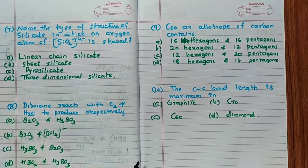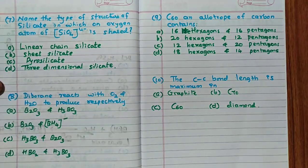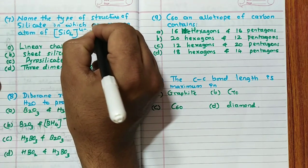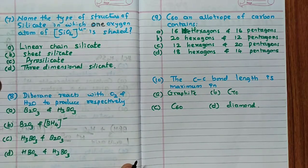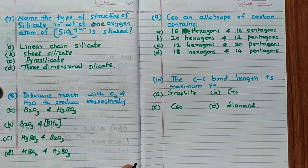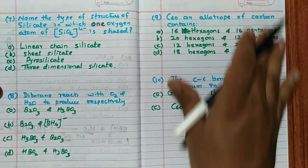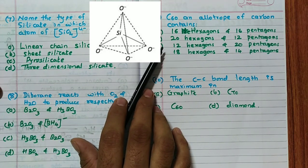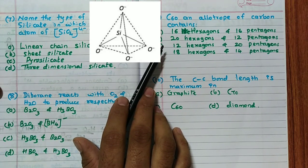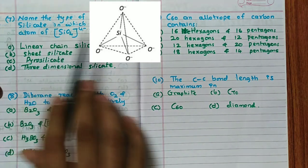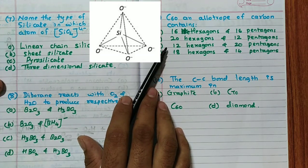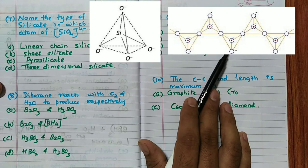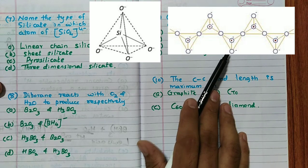The seventh question asks about the type of silicate in which one oxygen atom of SiO4⁴⁻ is shared. In an orthosilicate (SiO4⁴⁻), no oxygen atoms are shared. In a chain silicate, two oxygen atoms are shared, forming a linear chain structure.